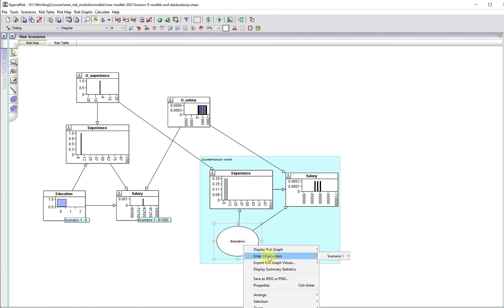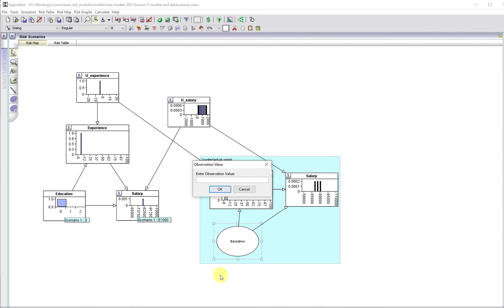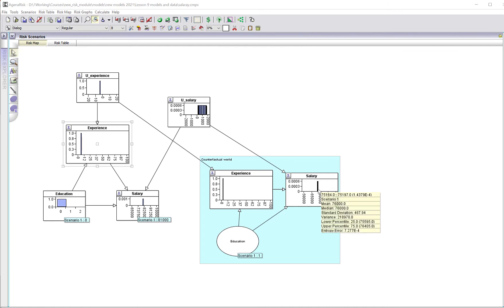Salary has got a mean 1000. But now in the counterfactual world, we're going to enter the value one, as opposed to zero. When we run the model, you can see that it's making the prediction 76,000.